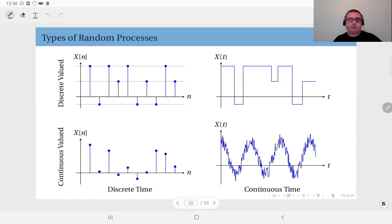Next, we look at the types of random processes. We have discrete time versus continuous time random processes, and discrete valued versus continuous valued. So we have essentially four types of random processes.